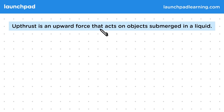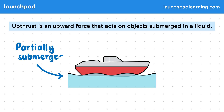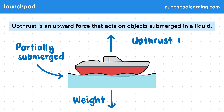Upthrust is an upward force that acts on objects submerged in a liquid. Here we have a boat that will float on the water's surface and it is partially submerged. The boat's weight is pulling it down, but because the water isn't solid there's no reaction force. Instead, upthrust keeps the boat afloat. Upthrust is experienced by both partially and fully submerged objects.